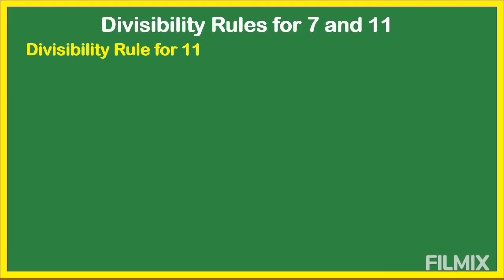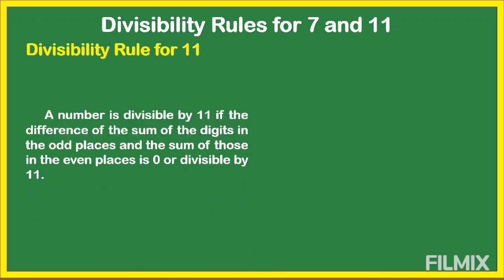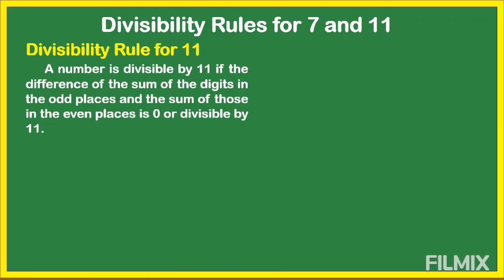Next is the divisibility rule for 11. A number is divisible by 11 if the difference of the sum of the digits in the odd places and the sum of those in the even places is 0 or divisible by 11.